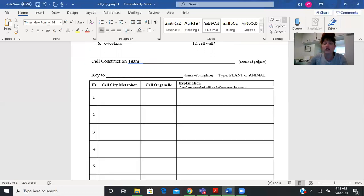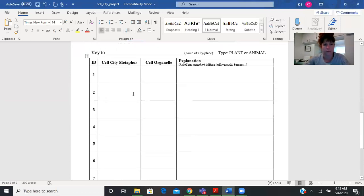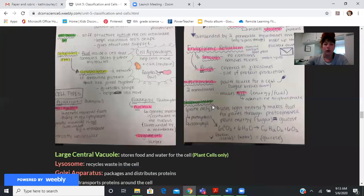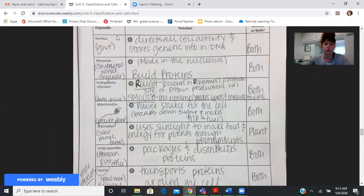And you need to circle whether you're doing a plant or animal - that lets you know what organelles you're including. Now when it talks about the cell city metaphor, this is where you can use what we've been doing on our notes.